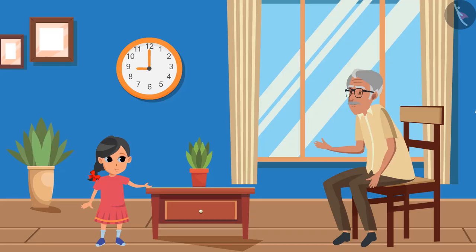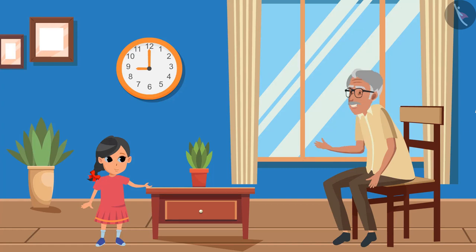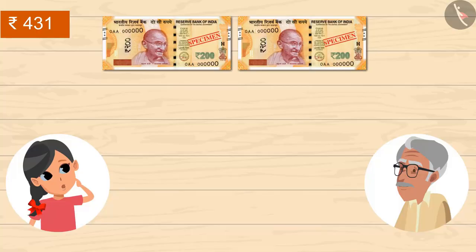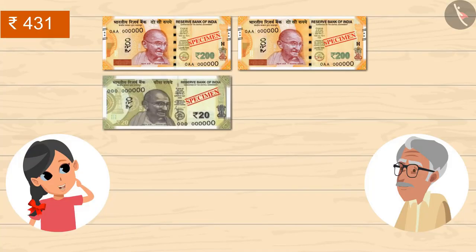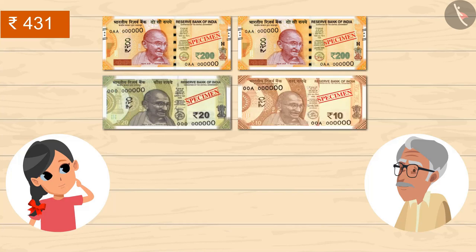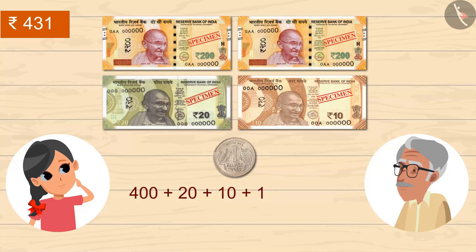Now tell me — if I give you a 2000 rupee note and you have to give me back 431 rupees, how will you make 431 out of these notes? 2 notes of 200, 1 note of 20, 1 note of 10, 1 coin of 1 rupee. So 400 plus 20 plus 10 plus 1 — the total gives 431 rupees.